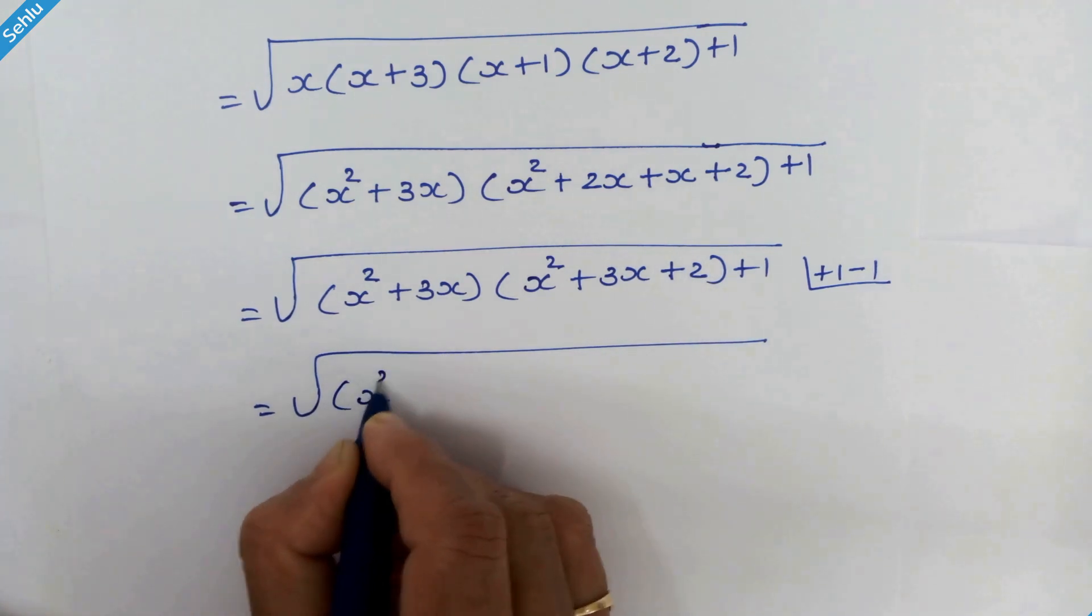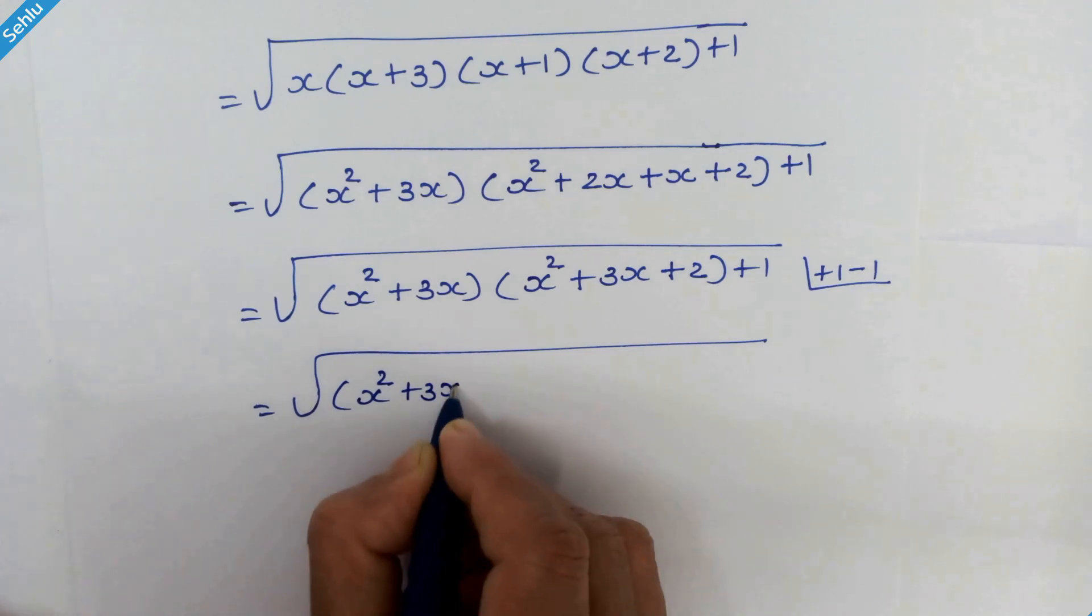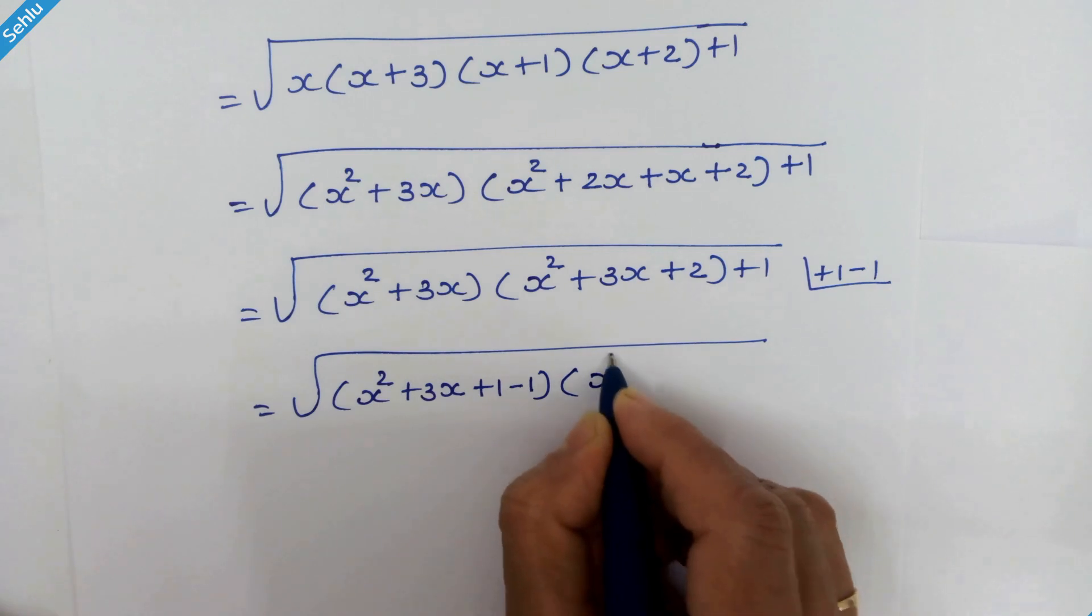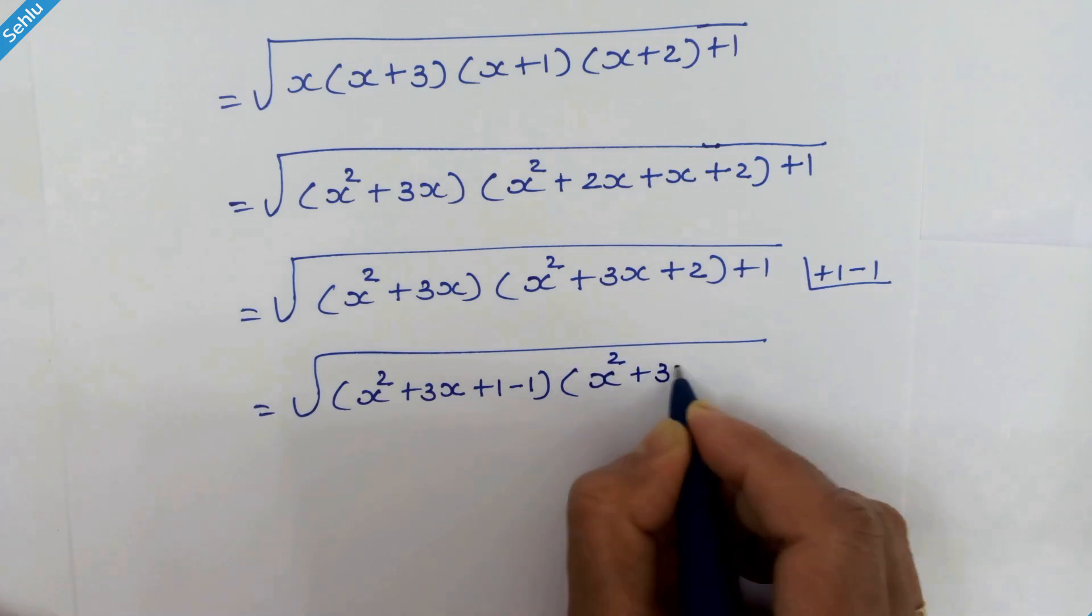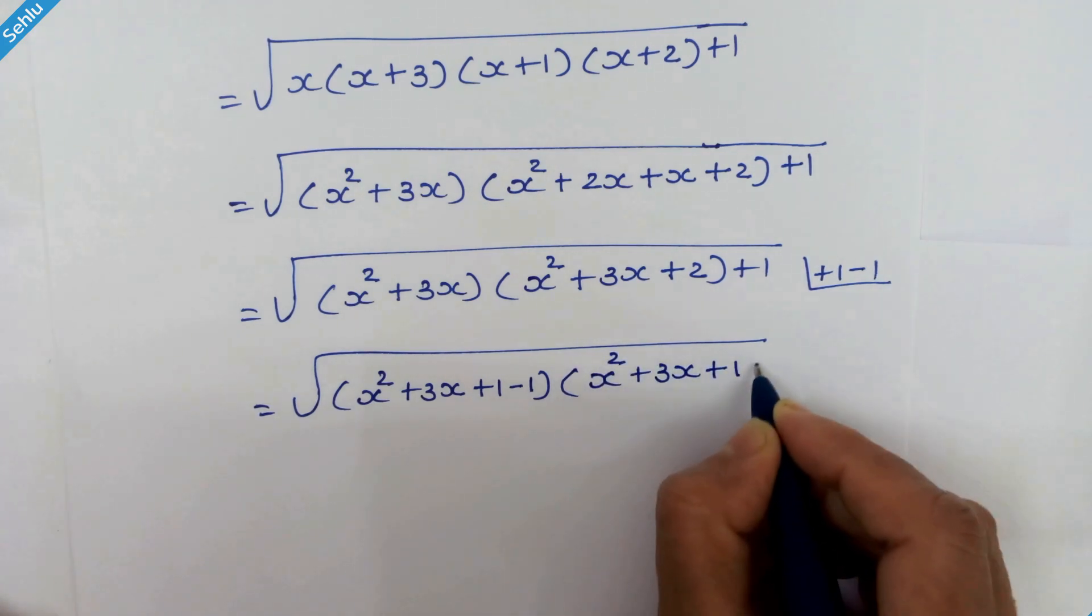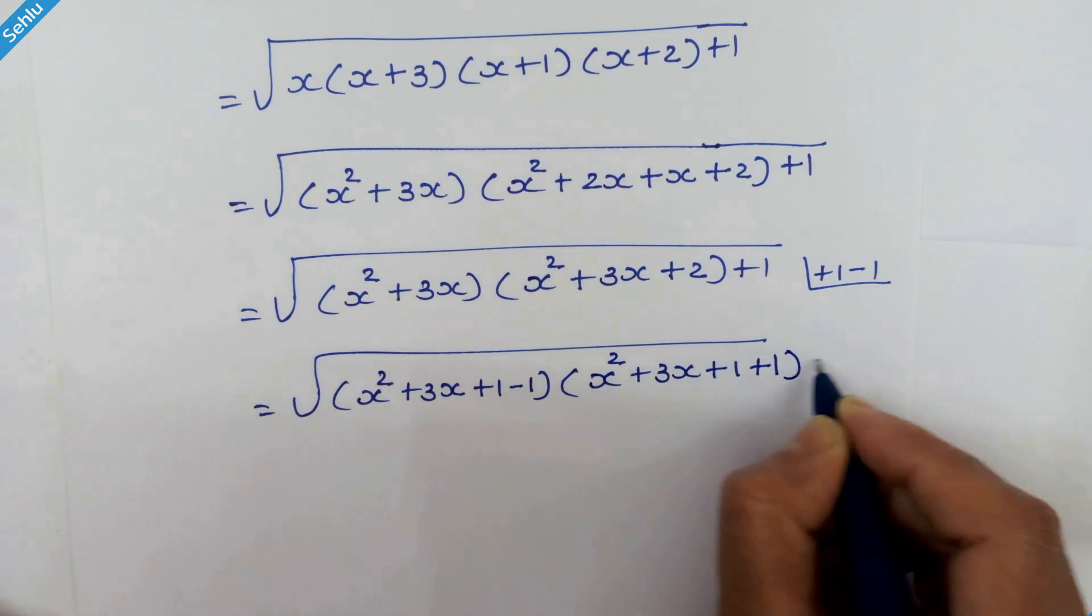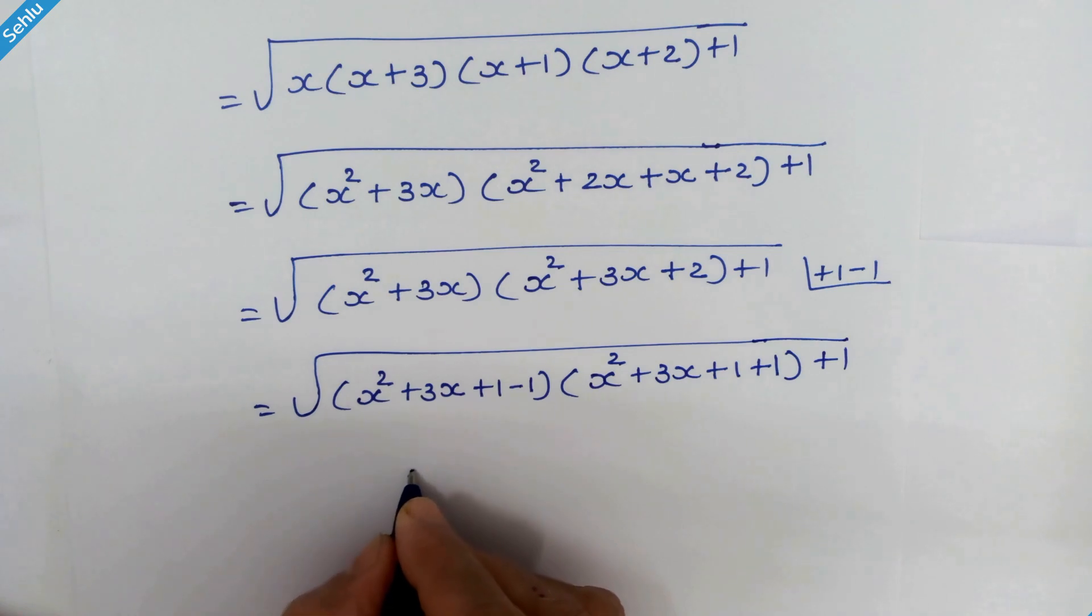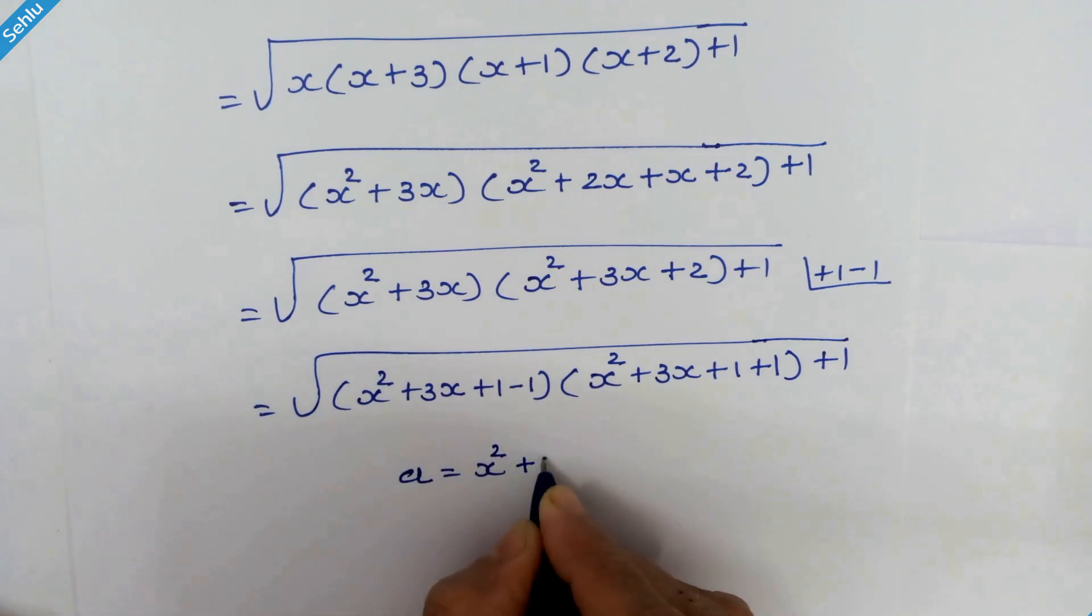So we have x squared plus 3x plus 1 minus 1, times x squared plus 3x plus 1 plus 1, plus 1. Now we will take a in place of x squared plus 3x plus 1.